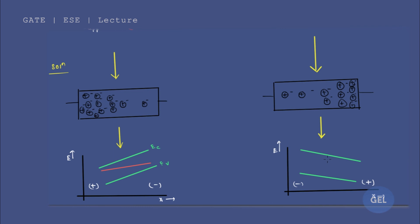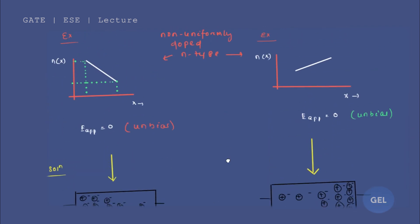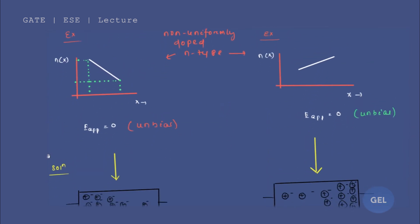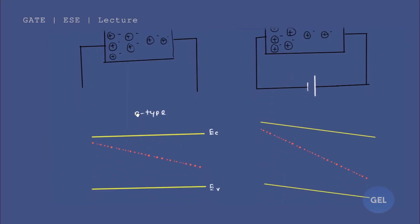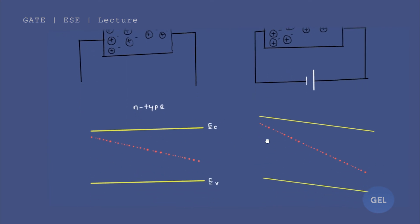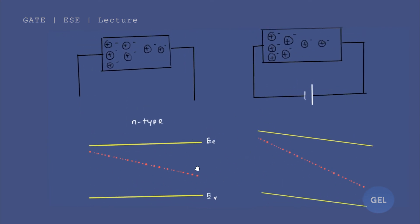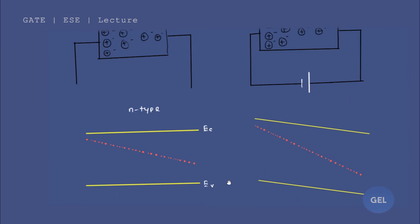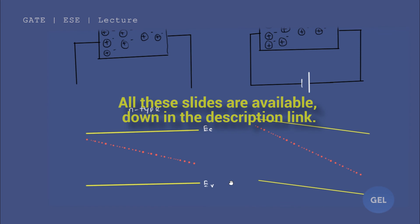With this, we are done with energy level shifting. Please revise this — there is nothing like rocket science in this concept. Revise this lecture once more if you could not understand. In the next lecture, we will discuss Fermi energy level shifting in the case of a p-n junction. Thank you so much, see you in the next lecture.